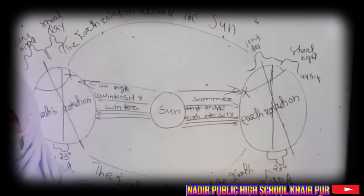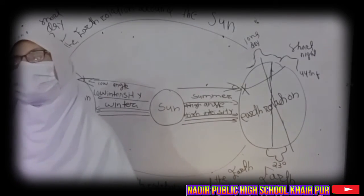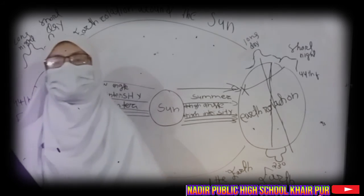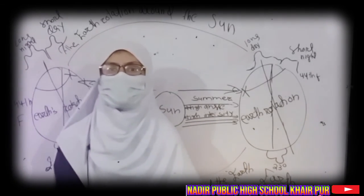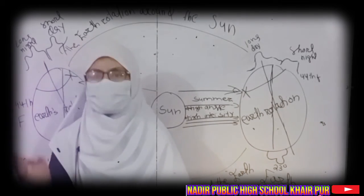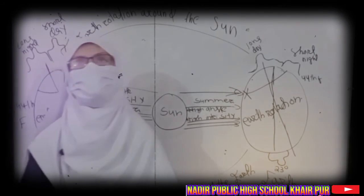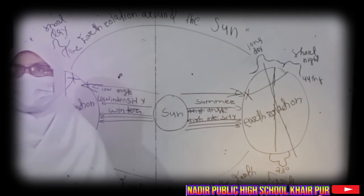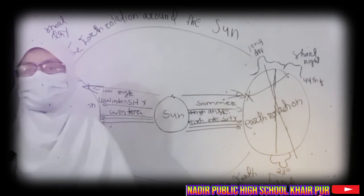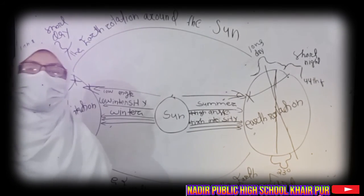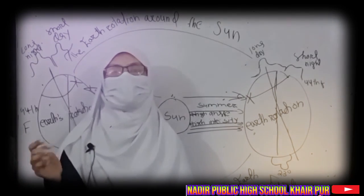On 21st March and 23rd September, the direct rays of the sun fall on the equator. At this position, neither of the poles is tilted toward the sun, so the whole earth experiences equal day and night. This is called the equinox. Thank you.